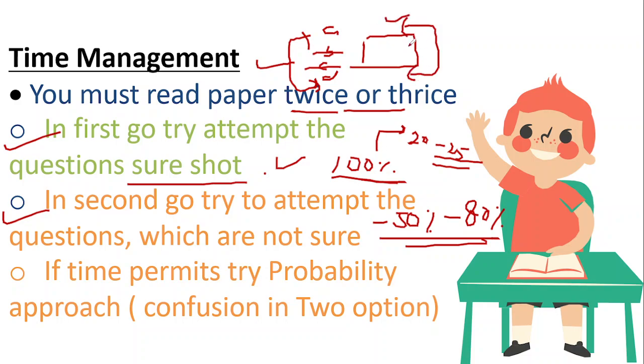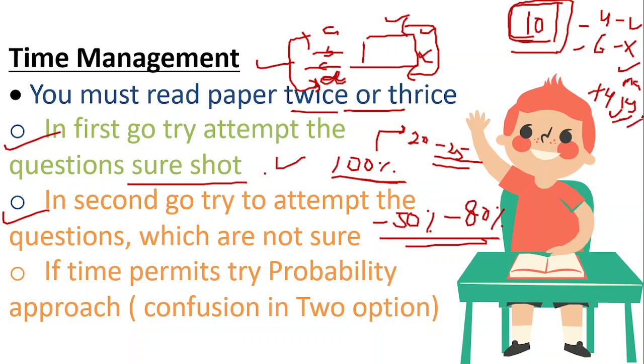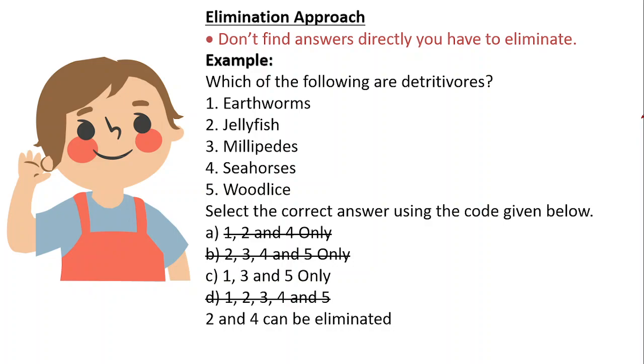Now what you do in that option is you find the probability that which goes with the question more. Your aim should be to maximize the marks and try to eliminate silly mistakes.